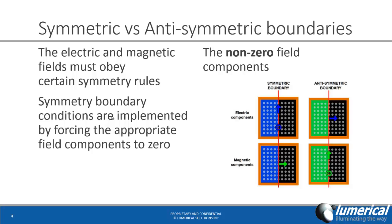There are two types of symmetry we can apply at the boundaries: the symmetric boundaries, which are in blue, and the anti-symmetric boundaries, which are in green. This is because the electric and magnetic fields must obey certain symmetry rules, and we have to choose the correct type based on the symmetry of the fields. Symmetry boundary conditions are implemented by forcing the appropriate field components to zero.